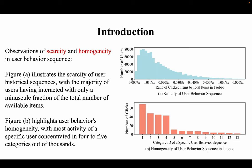We first begin with some observations and motivations of our work. We provide an analysis of user behavior in the Taobao dataset. Figure A illustrates the scarcity of user historical sequences, with the majority of users having interacted with only a minuscule fraction of the total number of available items. Figure B highlights user behavior's homogeneity, with the most activity of a specific user concentrated in four to five categories out of thousands.